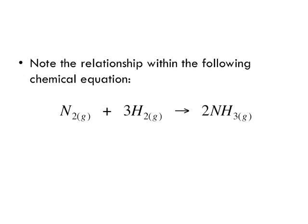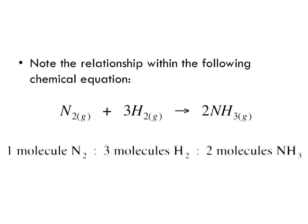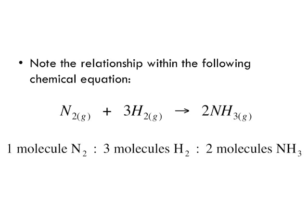Originally we know we have one molecule of nitrogen combines with three molecules of hydrogen to form two molecules of ammonia. So one molecule to three molecules to two molecules. Here is the ratio.